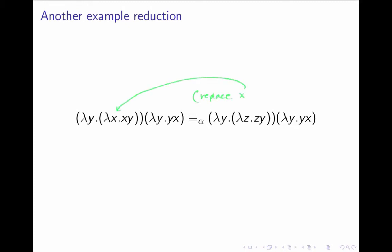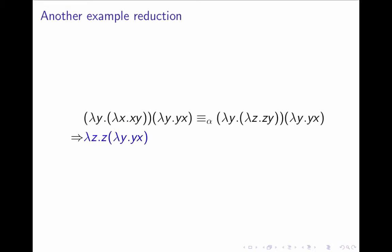We replace that x by z, and then everything goes fine, we can perform the beta reduction, and we get lambda z, z, lambda y, dot y, x. And there's nothing more we can do now, so that's very simple.